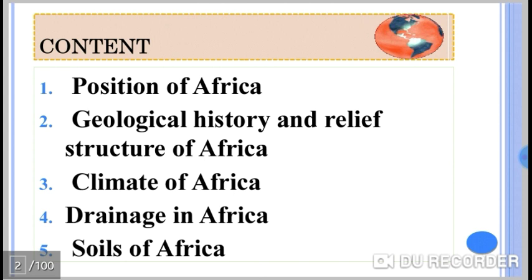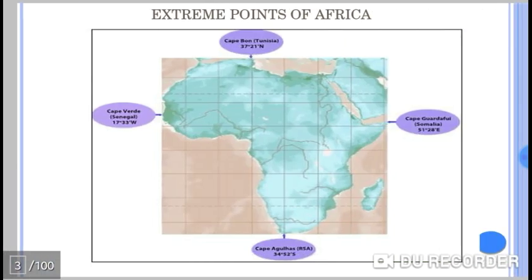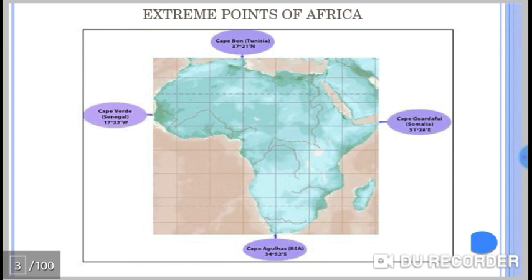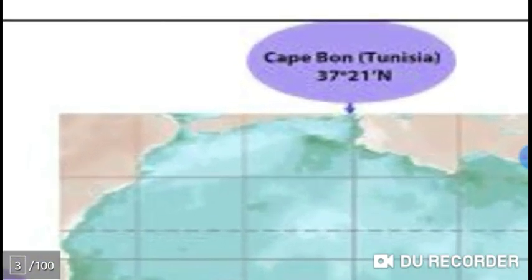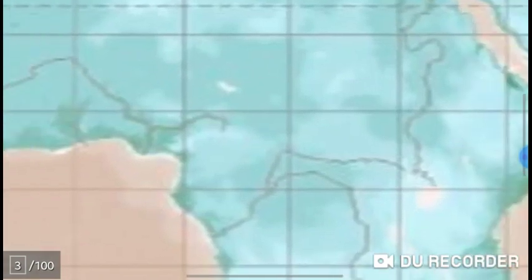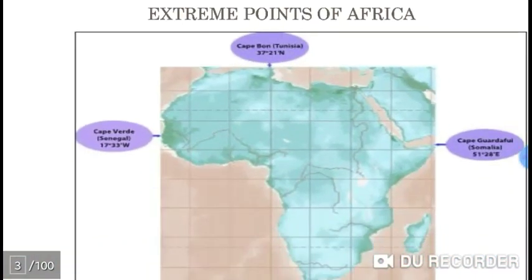The first topic is the Locations of Africa. When you see the extremes of Africa, the first one is the Northern Extreme, or Northern Tip of Africa, named Cape Bourbon at Tunisia, which is found at 37 degrees and 21 minutes North, beyond the Equator at 0 degrees, west to the South Periphery Line.